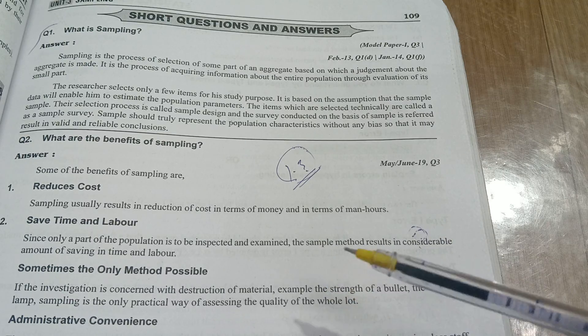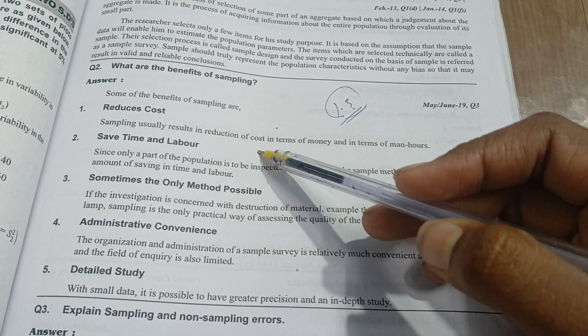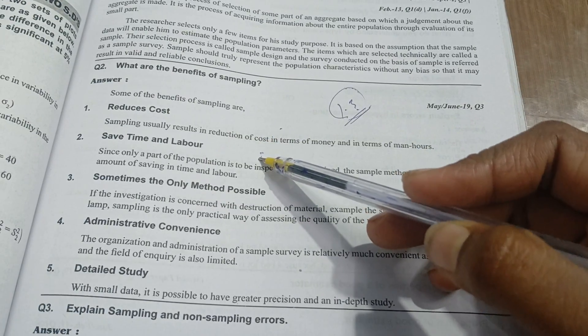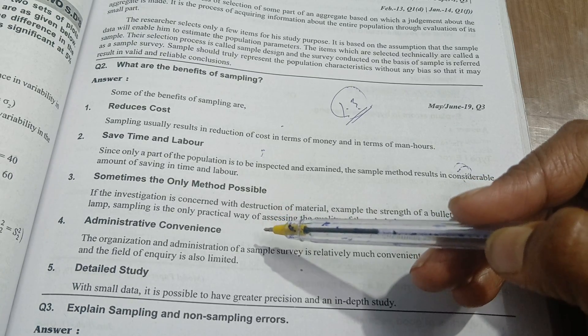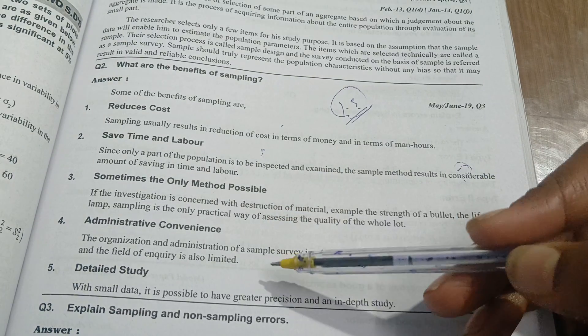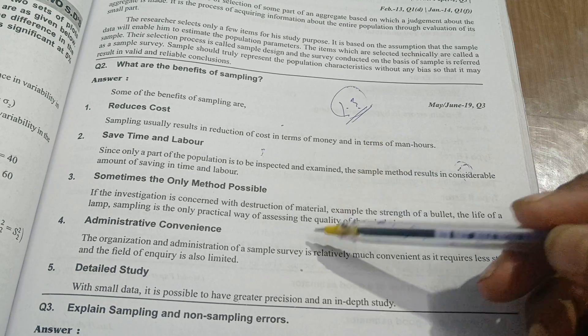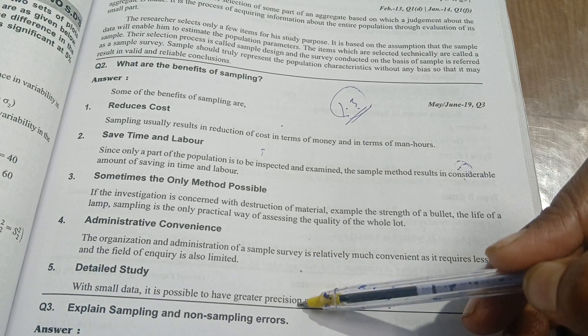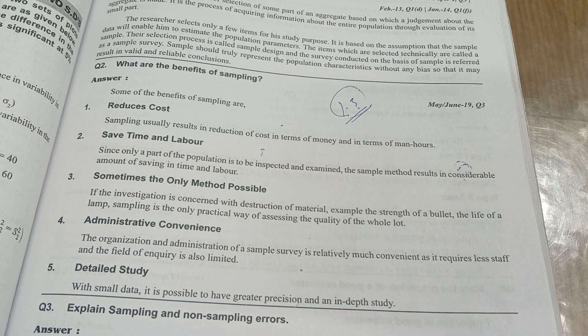What are the benefits of sampling? It will reduce the cost, it will reduce the expenses and it will save time, it will save labor cost also. Next, you are having administrative convenience. Administrative convenience is that whatever survey you are doing, it will require less staff. Next, detailed study means proper in-depth study will be included. There are various advantages in the sampling.